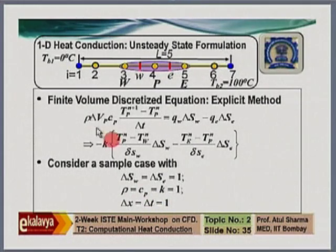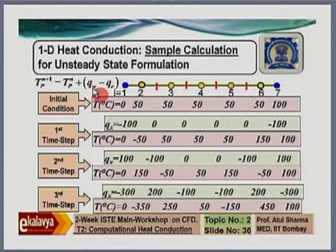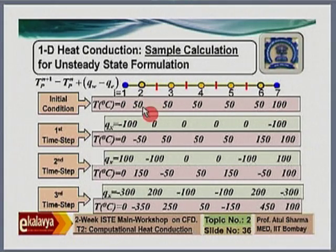Substituting these values into the discretized equation, the temperature at the new time level equals the temperature at the old time level plus the difference of heat fluxes on the west and east faces of the control volume. The boundary conditions are 0°C on the left and 100°C on the right, with an initial condition of 50°C everywhere.